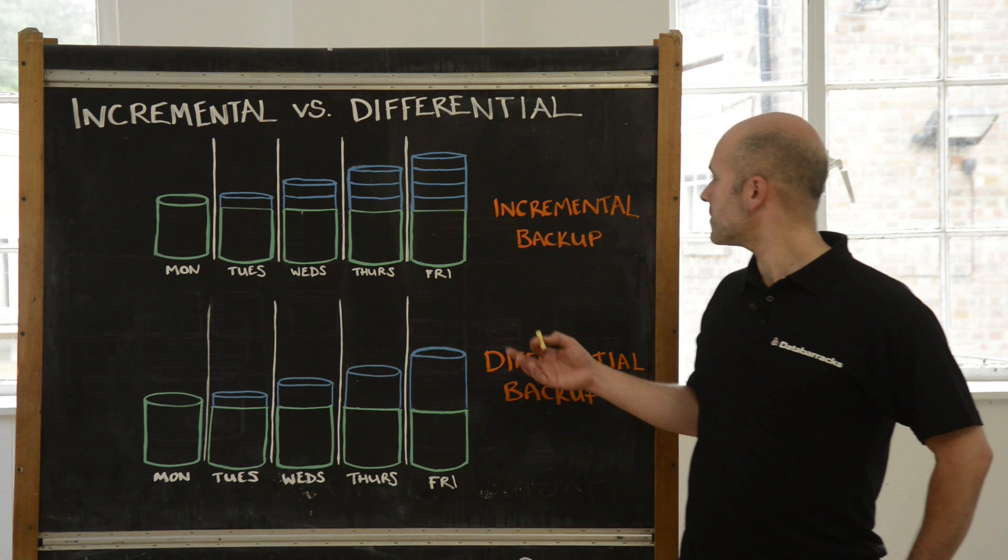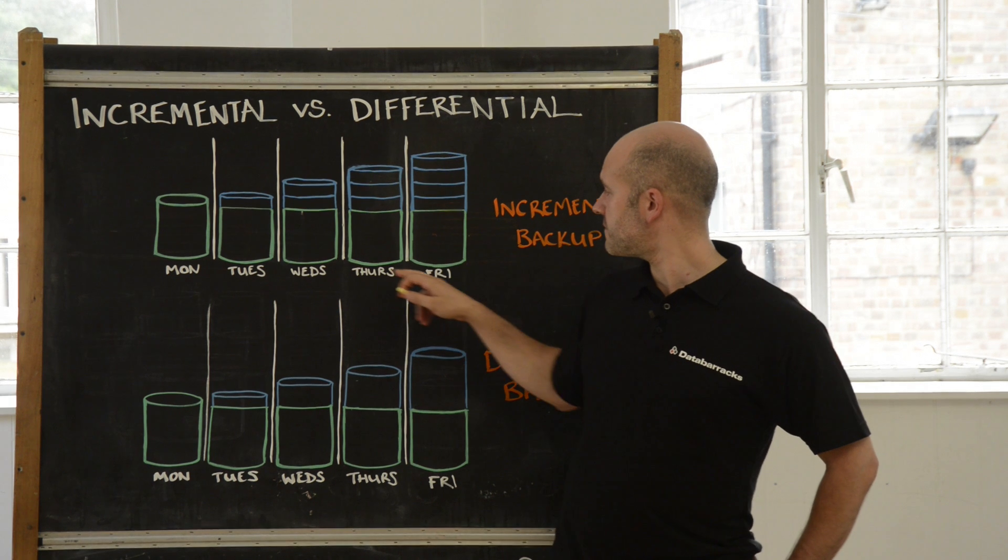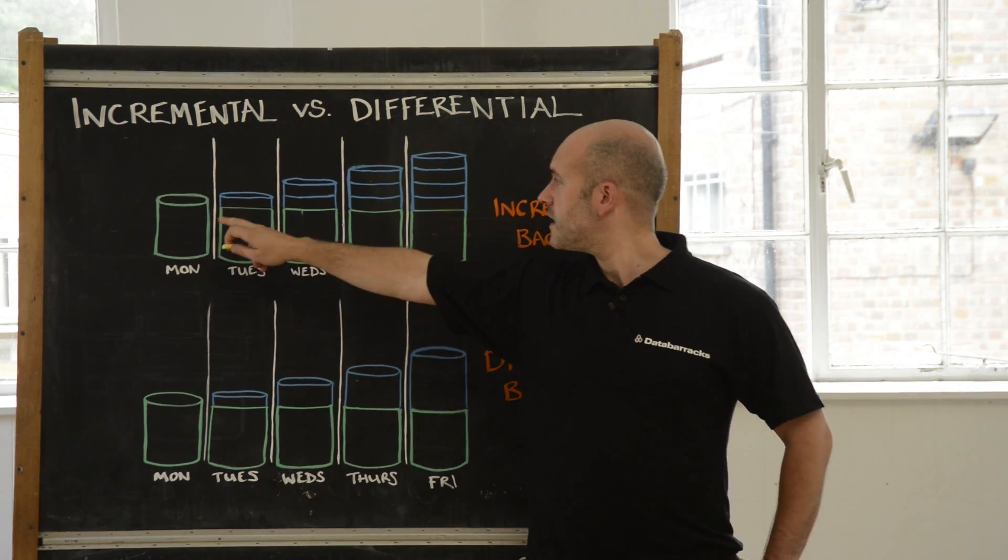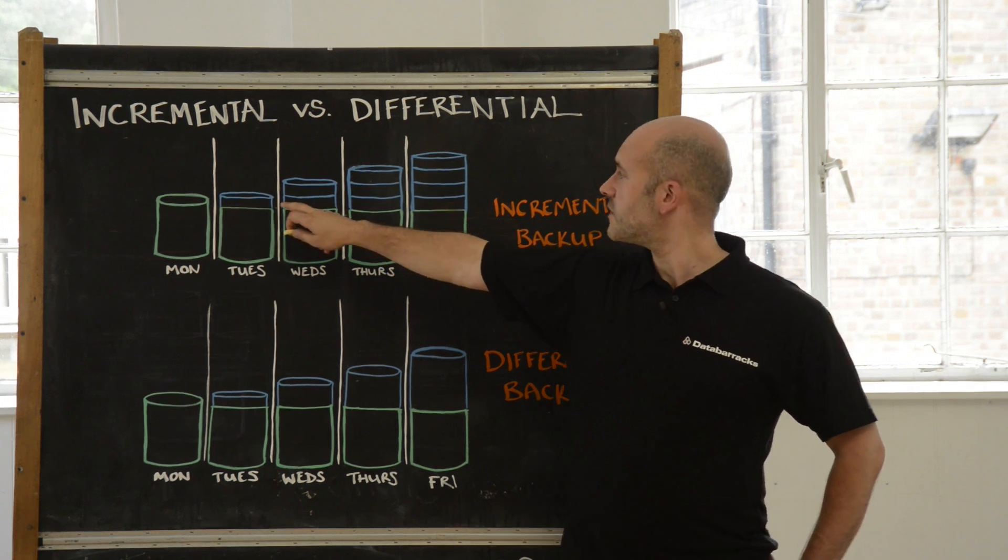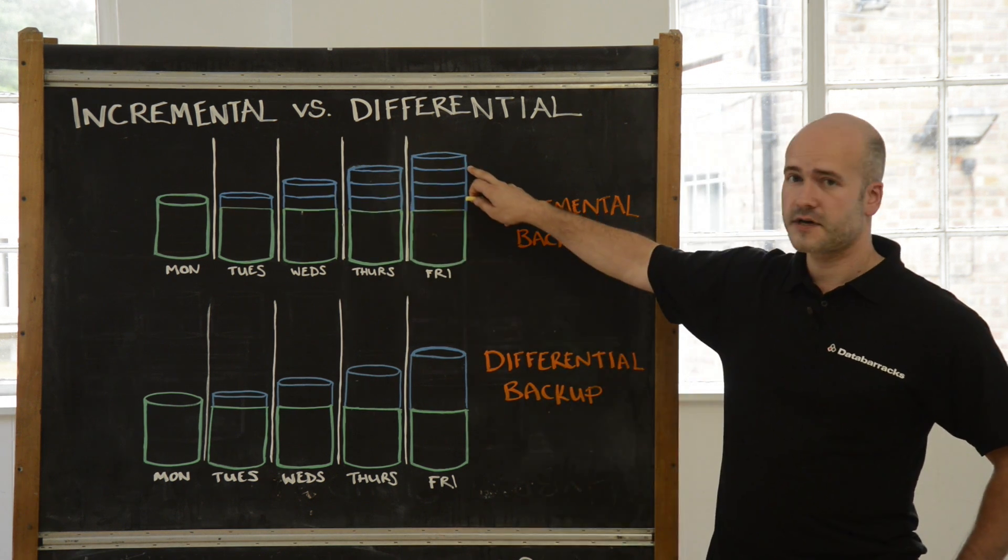And then we also have incremental backups, which if you take a backup life cycle from Monday to Friday, basically consists of a full backup on a Monday, and then just the changes on a Tuesday, followed by the changes on a Wednesday, and so forth until you get to a Friday.